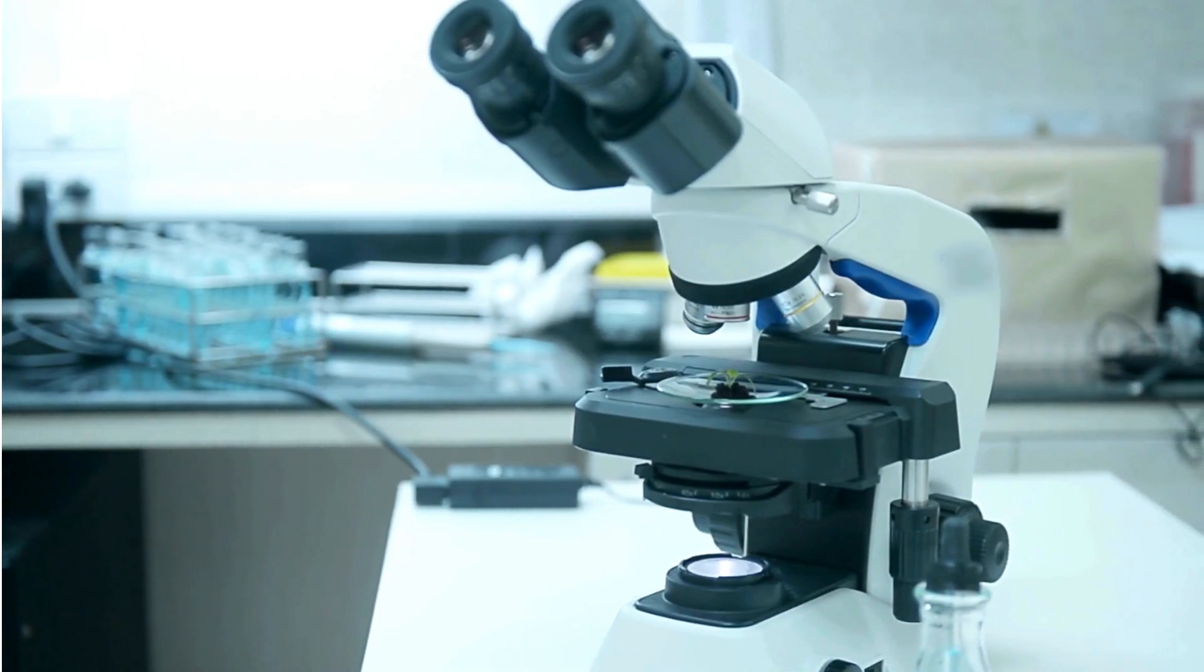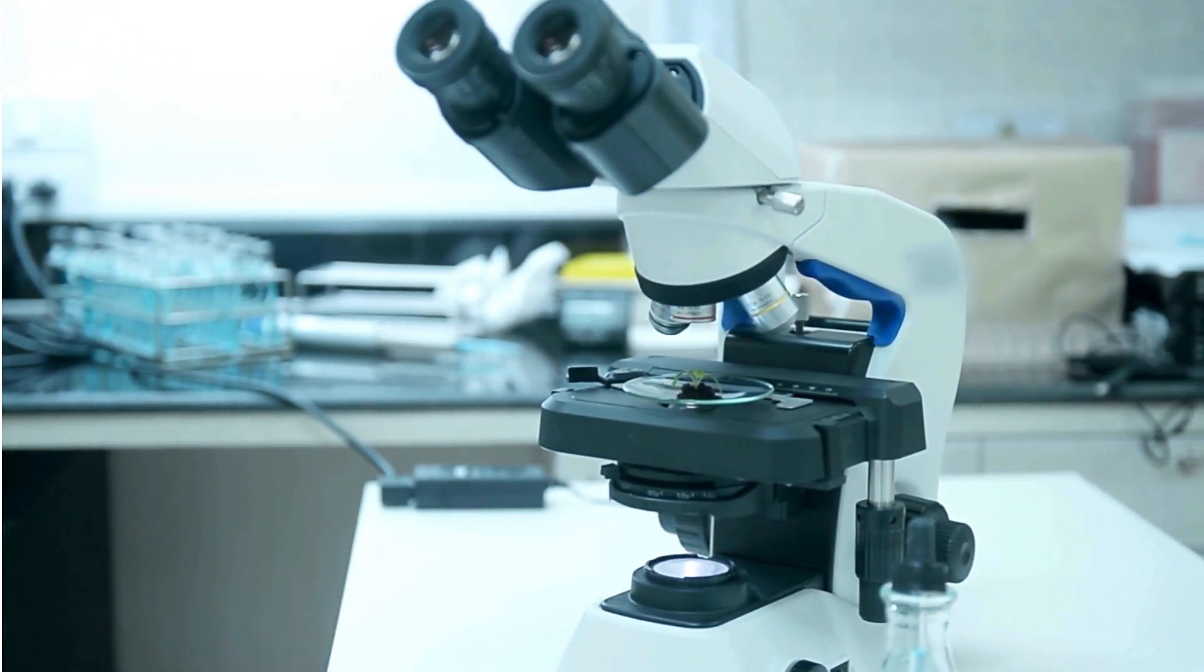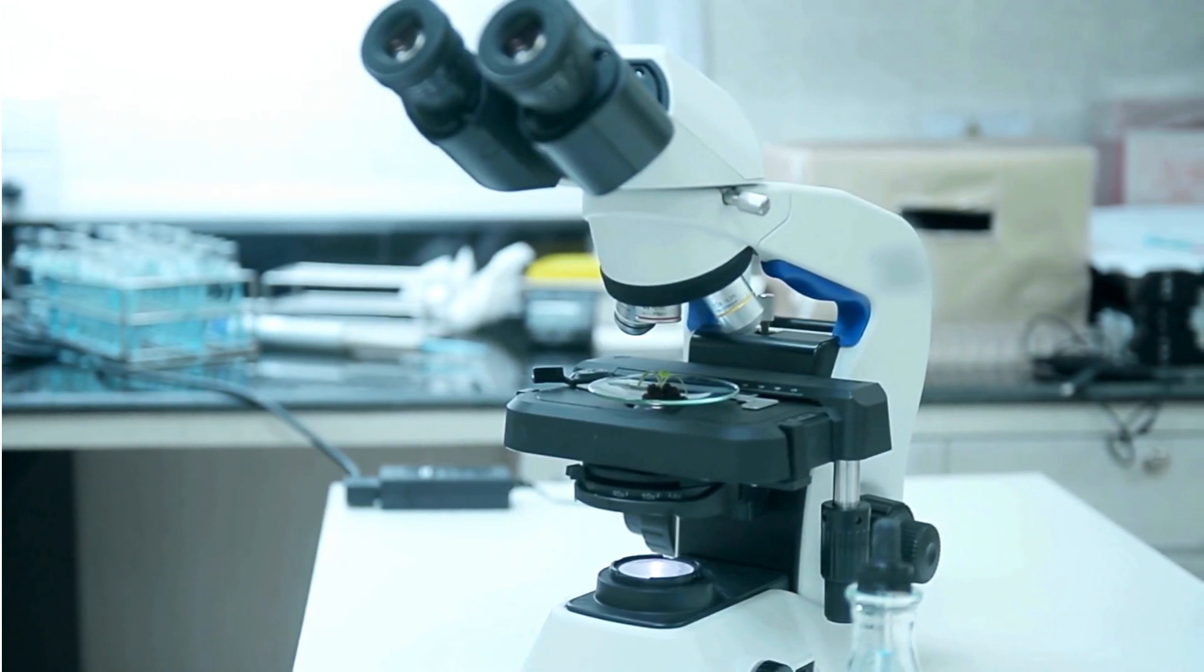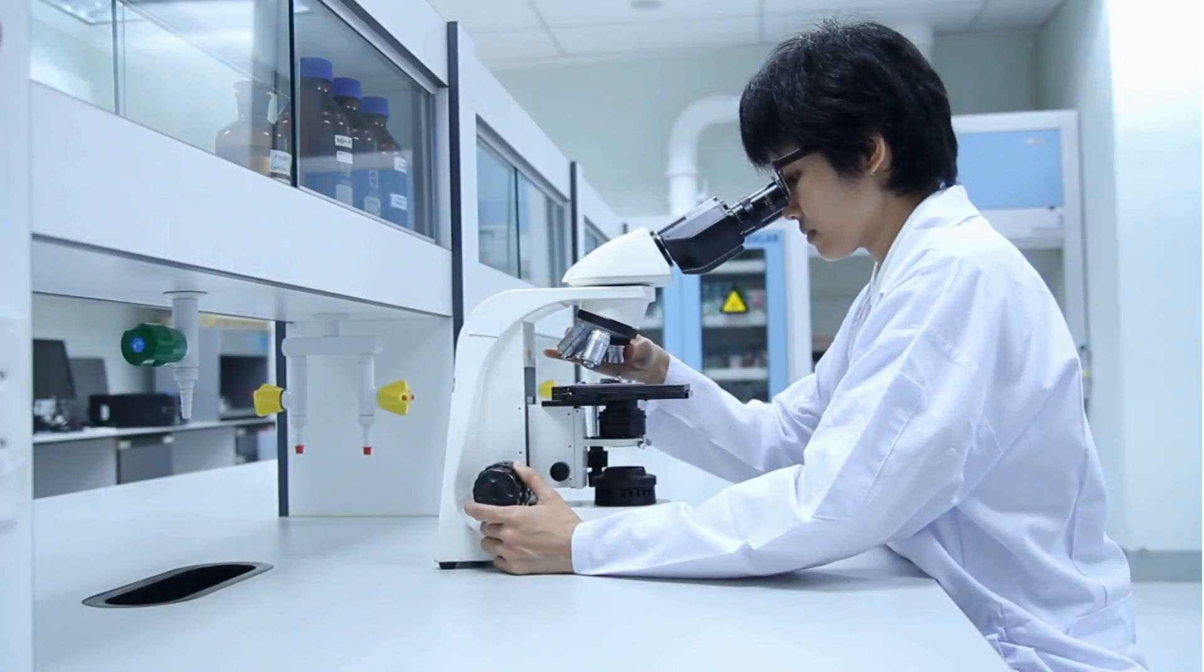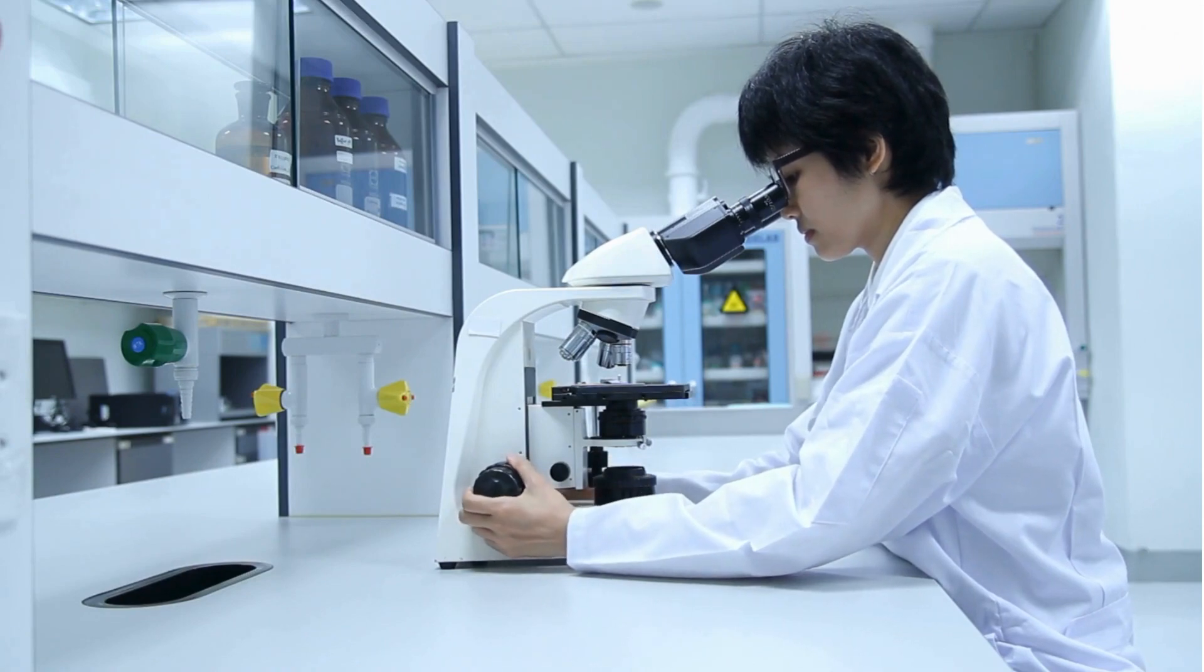A compound light microscope is a type of optical microscope that uses visible light and a system of lenses to magnify small specimens. The main parts of a compound light microscope include: